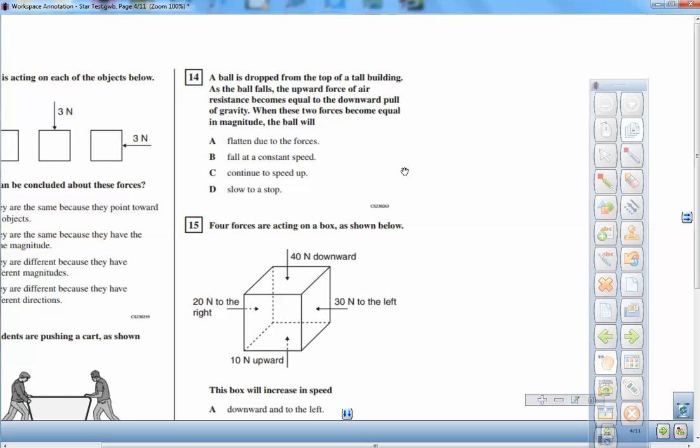Number 14. A ball is dropped from the top of a tall building, and as the ball falls, the upward force of air resistance becomes equal to the downward pull of gravity. When these two forces become equal in magnitude, the ball will, well, what will it do? Okay. So, imagine you have a ball. Here I'll use my little hand cursor. It's starting to fall.